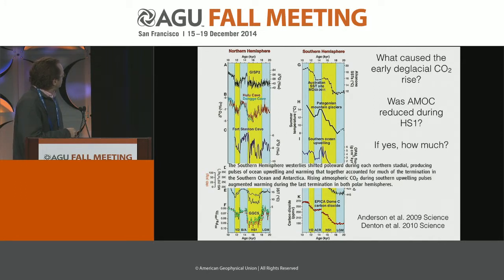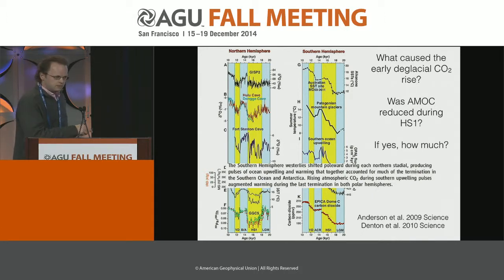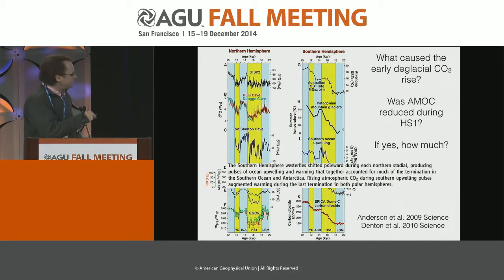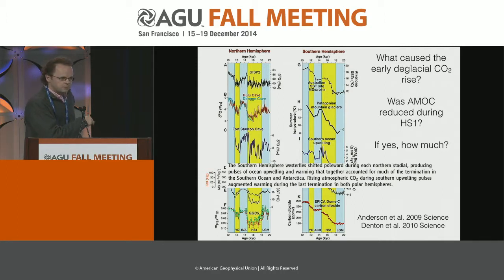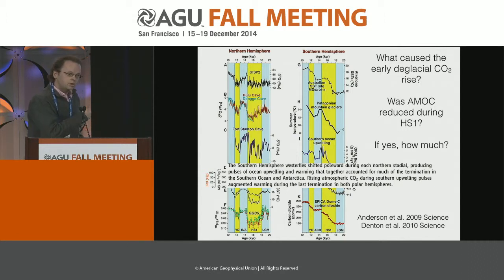To put up this quote here — I think this is from Anderson — those authors, and also as Jochen Schmidt earlier mentioned, suggest southern hemisphere processes: specifically, shifts in the southern hemisphere winds being responsible for the CO2 release. But I will present a different hypothesis for this early deglacial CO2 release.